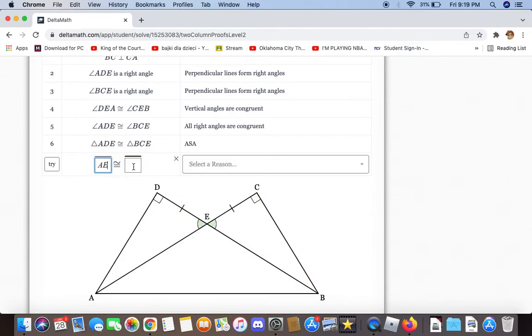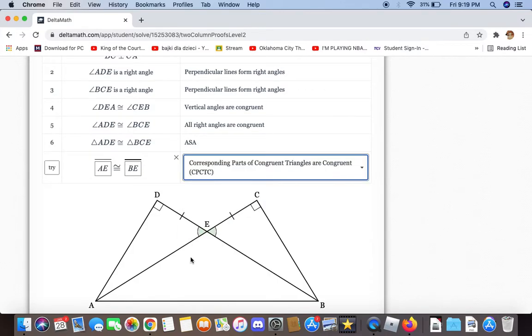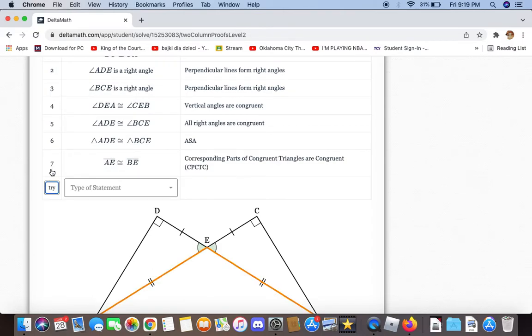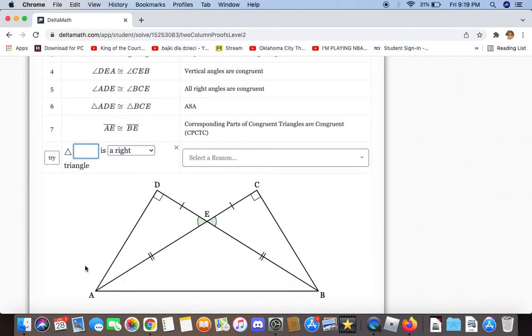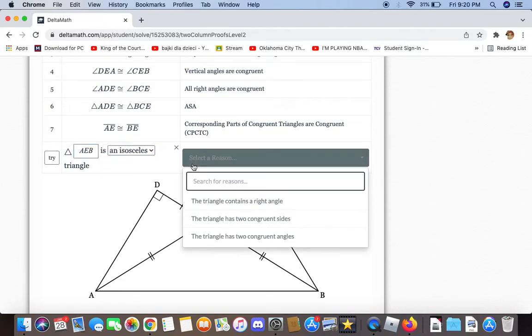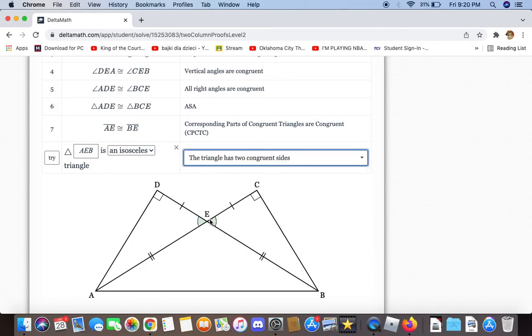We can also say that line segments AE and BE are corresponding parts of congruent triangles. We now have enough information to prove that triangle AEB is isosceles because the triangle has two congruent sides.